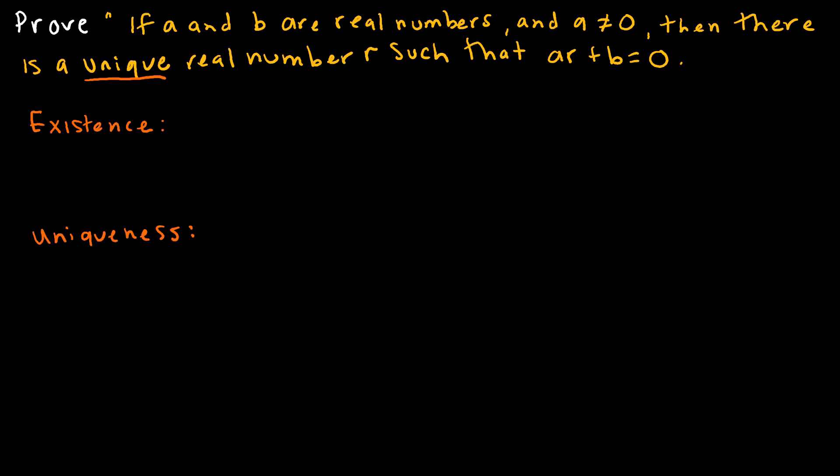Let's look at one proof of uniqueness. Whenever we're trying to prove that something is unique, there are two parts to our proof. First is that we have to prove existence, or that we show an element x, or r in this case, with this property ar plus b equals 0 exists.